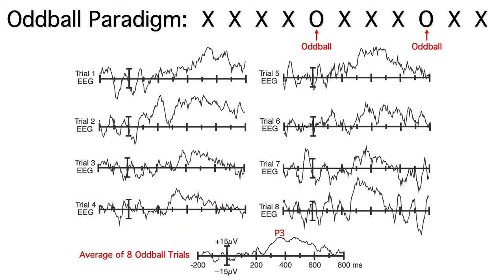Here you can see the average of the 8 oddball epics. We actually had way more than 8 oddballs, but I wanted you to see what it looks like if you have a small number of trials. You can see the P3 wave, a broad positivity from approximately 300 to 600 milliseconds.